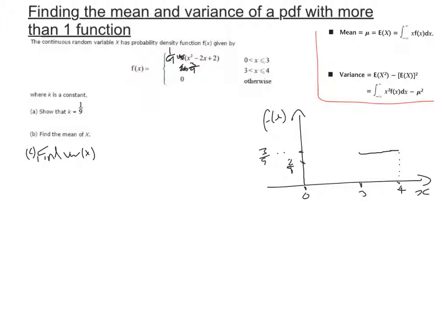The quadratic starts at 2 ninths. At 3, when I substitute 3 in, I'm going to get 9 minus 6 plus 2, which is 5 divided by 9, giving me a height of 5 ninths.